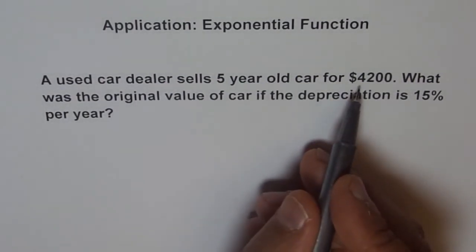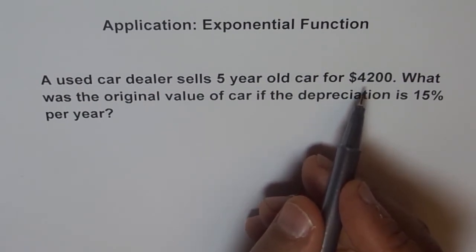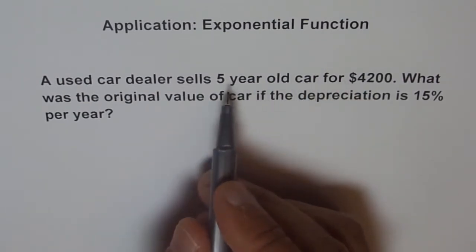The amount at which the car has been sold is $4200. We have to find the amount at which the car was bought 5 years prior.